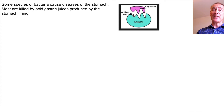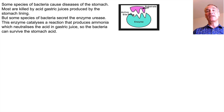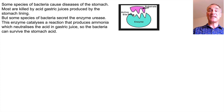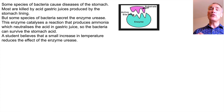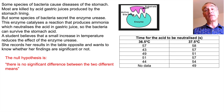Let's look at one more example, showing how you can record results in a table — which is how exam questions often present the information. Some species of bacteria cause stomach disease but are normally killed by acid gastric juices. However, some bacteria secrete the enzyme urease, which catalyses the production of ammonia, neutralising those gastric juices so the bacteria can survive. A student believes a small increase in temperature reduces the effect of urease and records her results in a table.